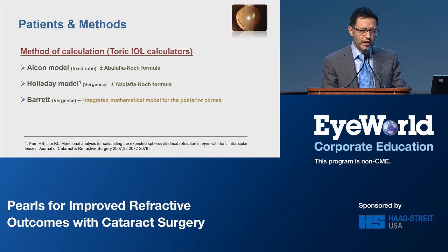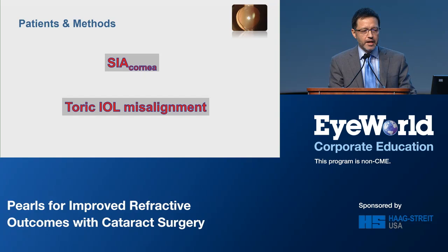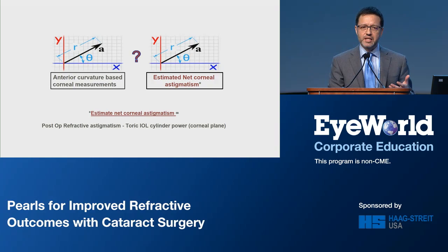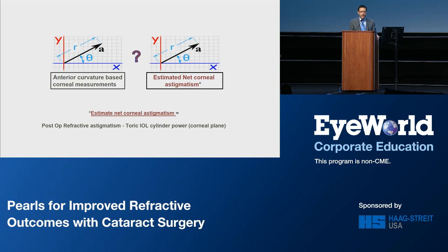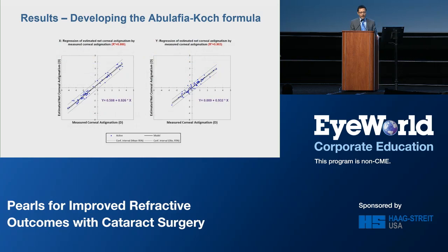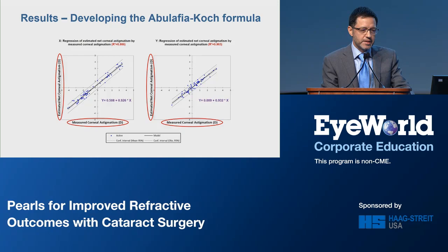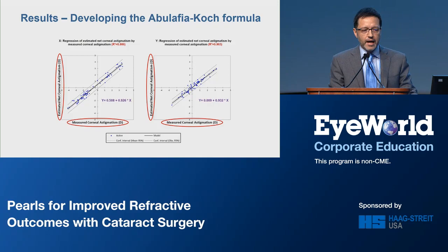In order to exclude the influence of SIA and Toric IOL misalignment, we used postoperative corneal measurements and the actual postoperative Toric IOL axis alignment. Bearing in mind that astigmatism is a vector, the main idea was to figure out the nature of the correlation between the X and Y components of the anterior curvature-based corneal measurements and the estimated net corneal astigmatism. We did find a high correlation between the measured corneal astigmatism by the LENSTAR and the estimated total corneal astigmatism. Although we tried many sophisticated ways to improve it, a simple linear regression did the best for our dataset.